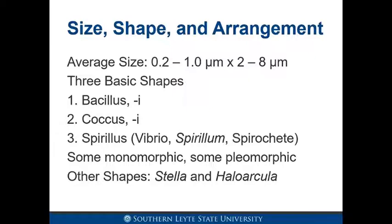Average size: 0.2 to 1 micrometer by 2 to 8 micrometers. Three basic shapes: bacillus or bacilli, coccus or cocci, and spirillus — which includes vibrio, spirillum, and spirochete. Some bacteria are monomorphic and some are pleomorphic; other shapes include stella and haloarcula.